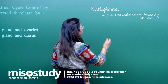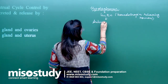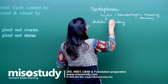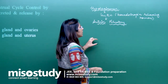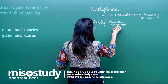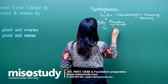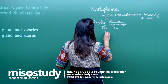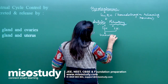This GNRH acts on the anterior pituitary. When it acts on the anterior pituitary, two hormones are released: FSH and LH — follicular stimulating hormone and luteinizing hormone. These two hormones both act on a growing follicle.